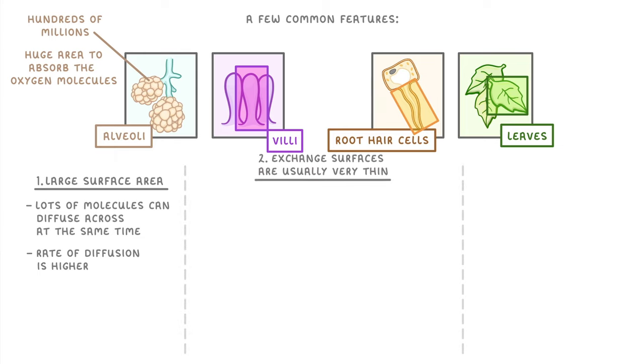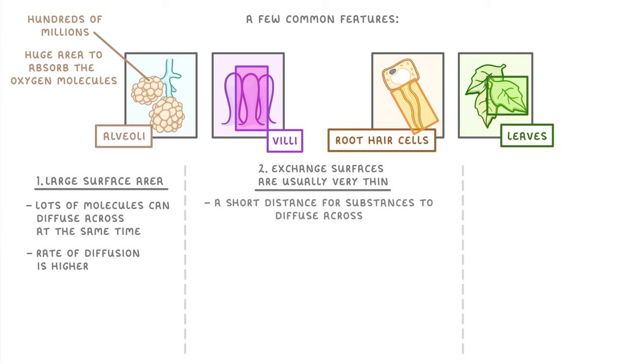The second common feature is that these surfaces themselves are usually very thin, and this means there's only a short distance for substances to diffuse across. For example, in root hair cells, water only has to diffuse across a thin cell wall and cell membrane to get into the plant. We often refer to this as a short diffusion distance, and it's important because it means that diffusion can take place more quickly.